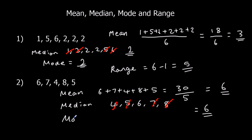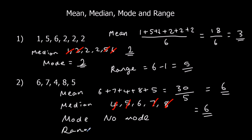The mode — there is no mode. There is no number that occurs more than once, so there's no mode. And the range: biggest number 8, smallest is 4. 8 take away 4 is 4. So the range is 4.